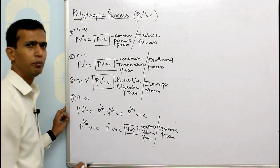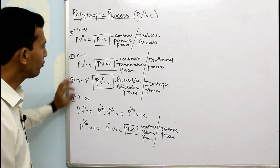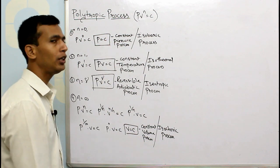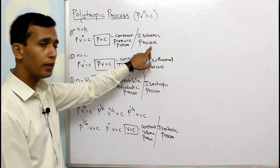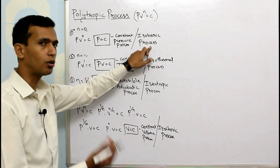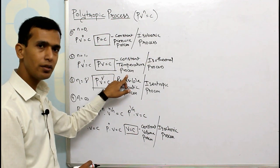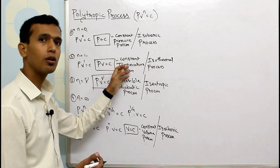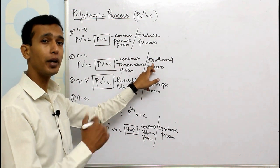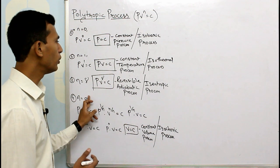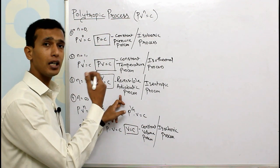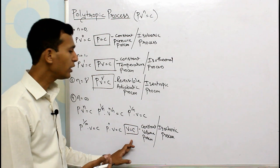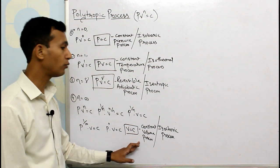So by changing the value of n you obtain various processes. Each of these processes has two sub-types: constant pressure can be heating or cooling; constant temperature can be isothermal expansion or isothermal compression; adiabatic can be adiabatic expansion or adiabatic compression; and constant volume can be constant volume heating or constant volume cooling.